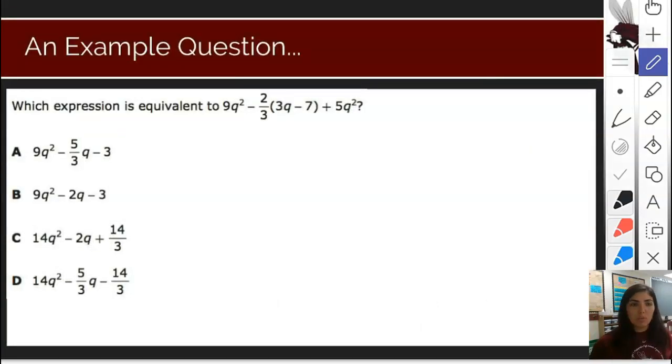So for example, a question you might see says, which expression is equivalent to nine Q squared minus two thirds times three Q minus seven plus five Q squared. Complicated, still degree two. We're going to need to use distribution, but all we're doing is writing a similar or equivalent form.